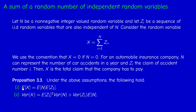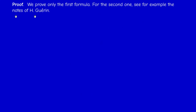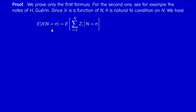I am going to prove equation one, which you were asked to check in the project, using conditional expectation. For the second formula, you can see the proof in the notes of Elenguerin available online. Since X is a function of N, it is natural to condition on N. We compute the conditional expectation of X given that N equals some non-negative integer n, where N is the random variable and n is a fixed number (0, 1, 2, 3, …).